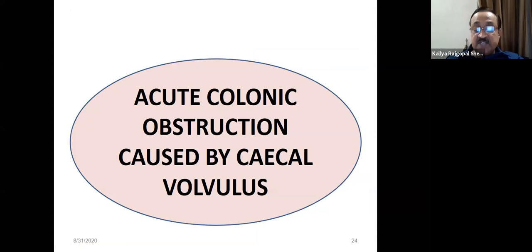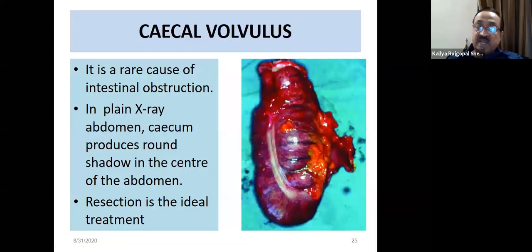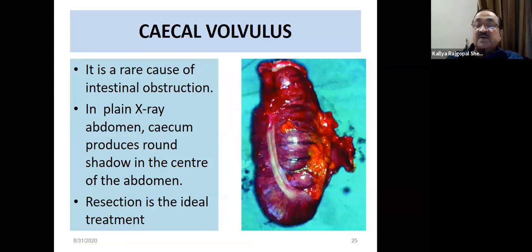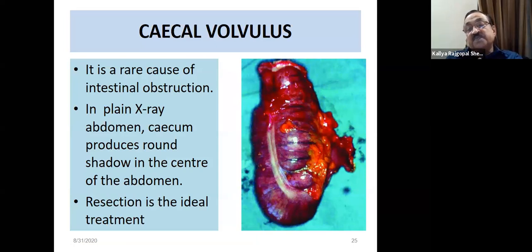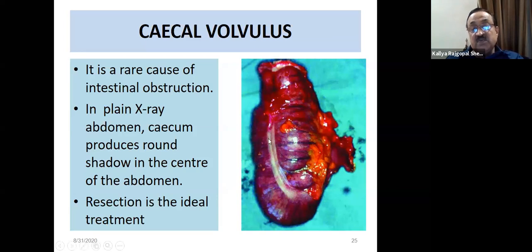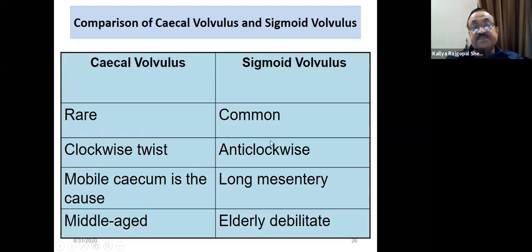Cecal volvulus is a rare cause of colonic obstruction — about one-third of all volvulus cases. The cecum is a relatively fixed structure, but an undescended cecum sitting higher up, or one with a complete mobile mesentery, can undergo volvulus. In such cases, resection is preferred. Unlike sigmoid volvulus which twists anti-clockwise, cecal volvulus always goes clockwise.